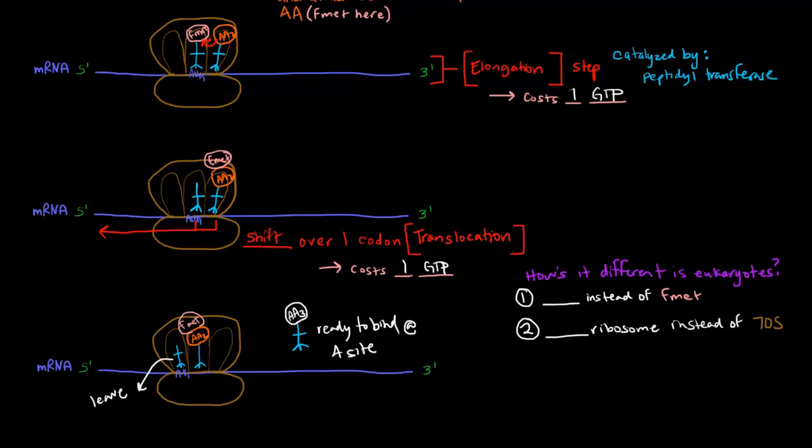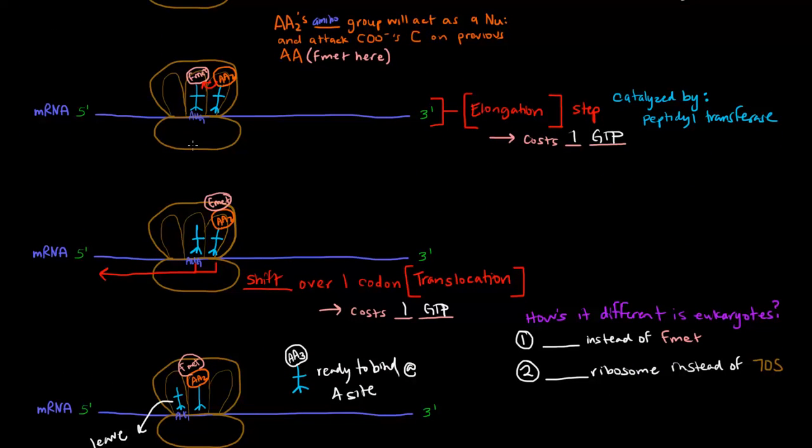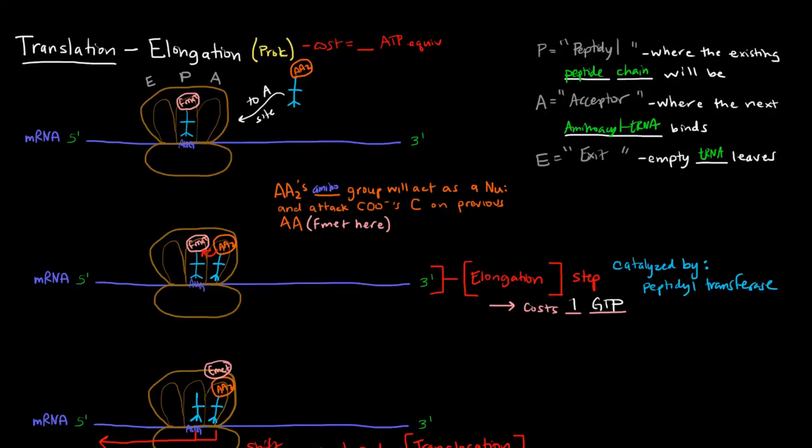How is this different in eukaryotes? In eukaryotes, there's no formyl-methionine, just methionine. The other difference is that instead of a 70S ribosome, there's an 80S ribosome. Other than that, it's pretty much the same.